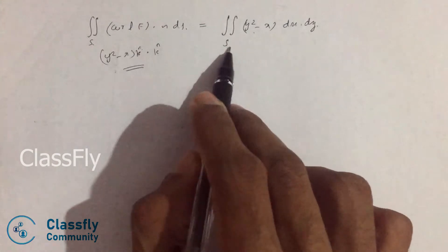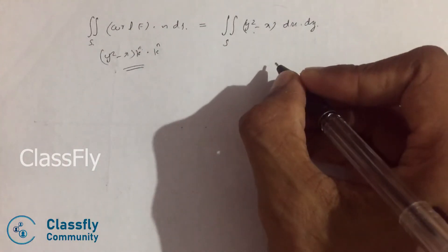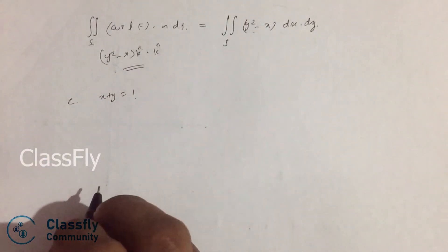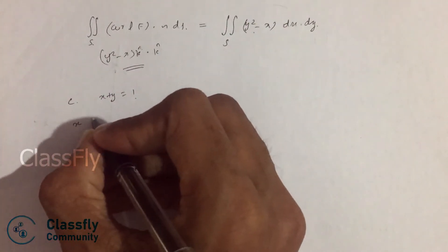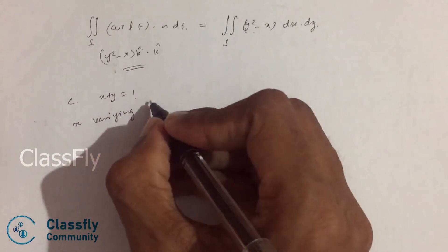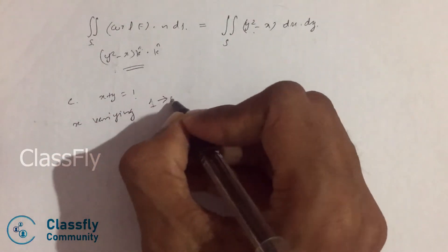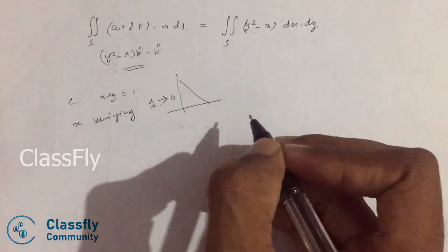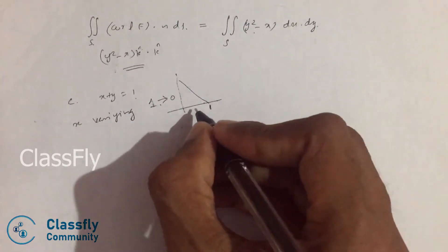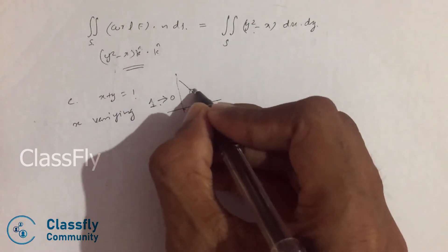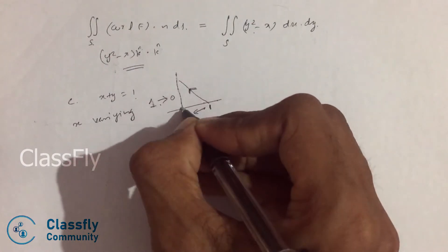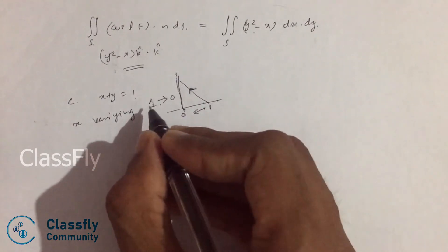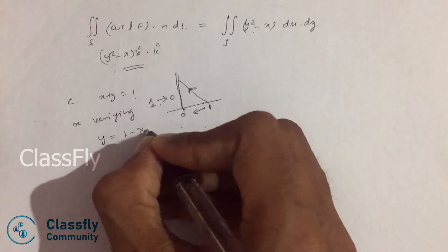Now we have to define this first. So we are taking the curve x plus y equal to 1. We have x varying from 1 to 0. Since the line was like this, the x varies from 1 back to 0. So since we are taking the positive orientation, the x is varying from 1 to 0. And y is equal to 1 minus x.